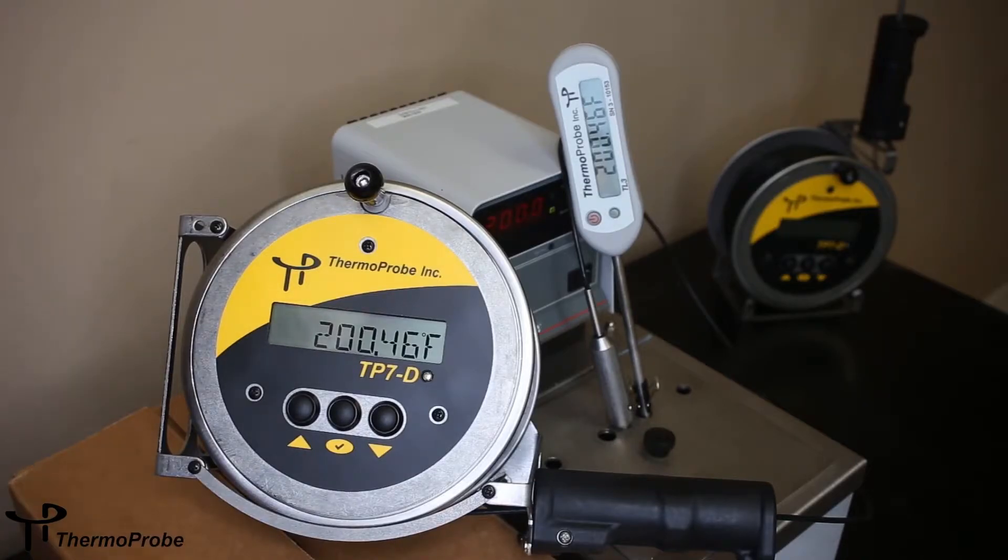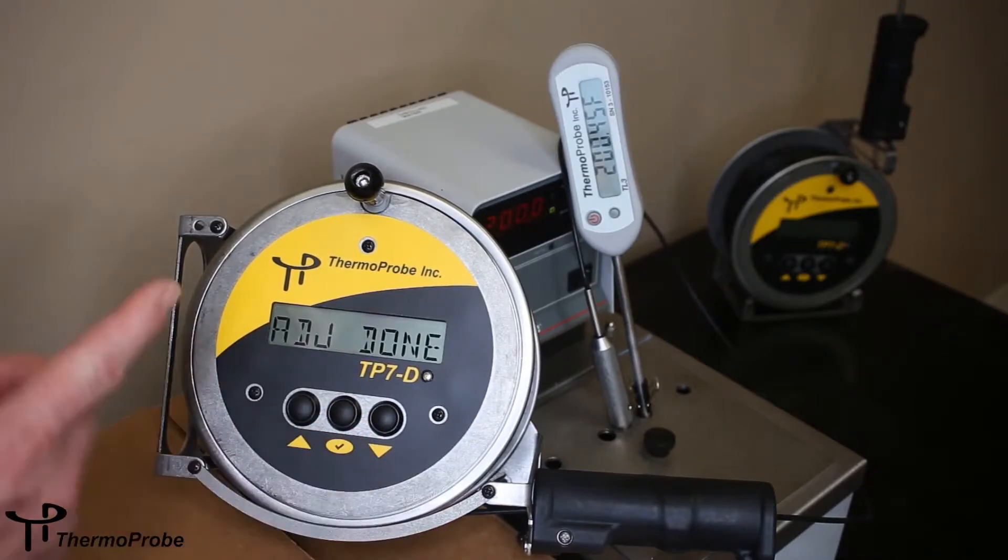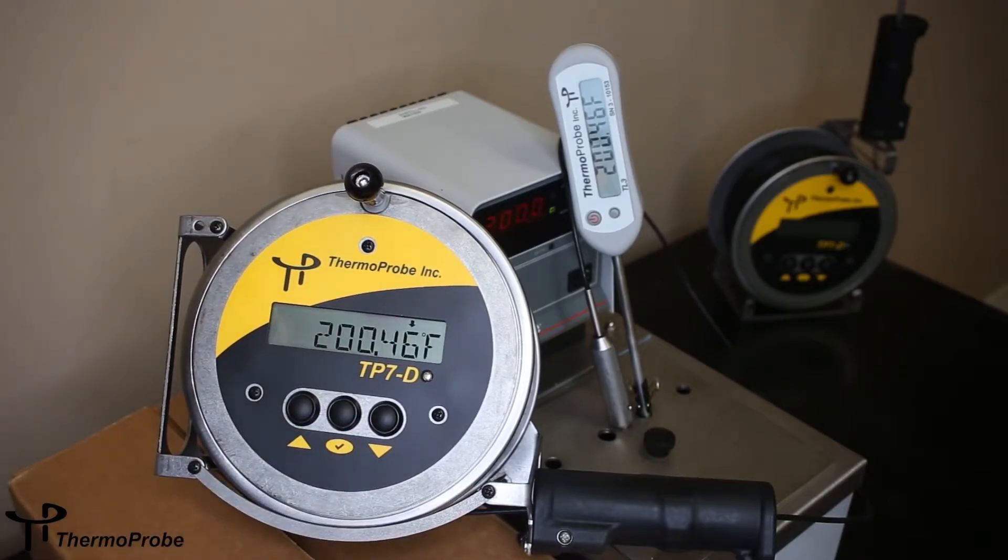All right. Once we're happy that those two match, we hit select. We get a save. We confirm that by selecting again, and it says adjustment done. We want to hit select on that, and we've completed our calibration.